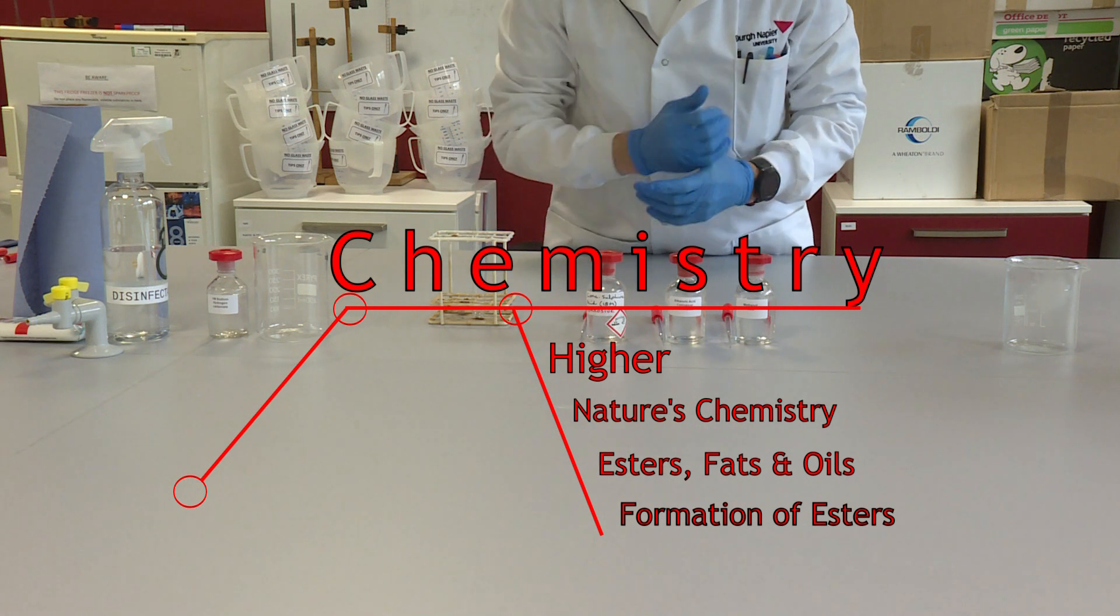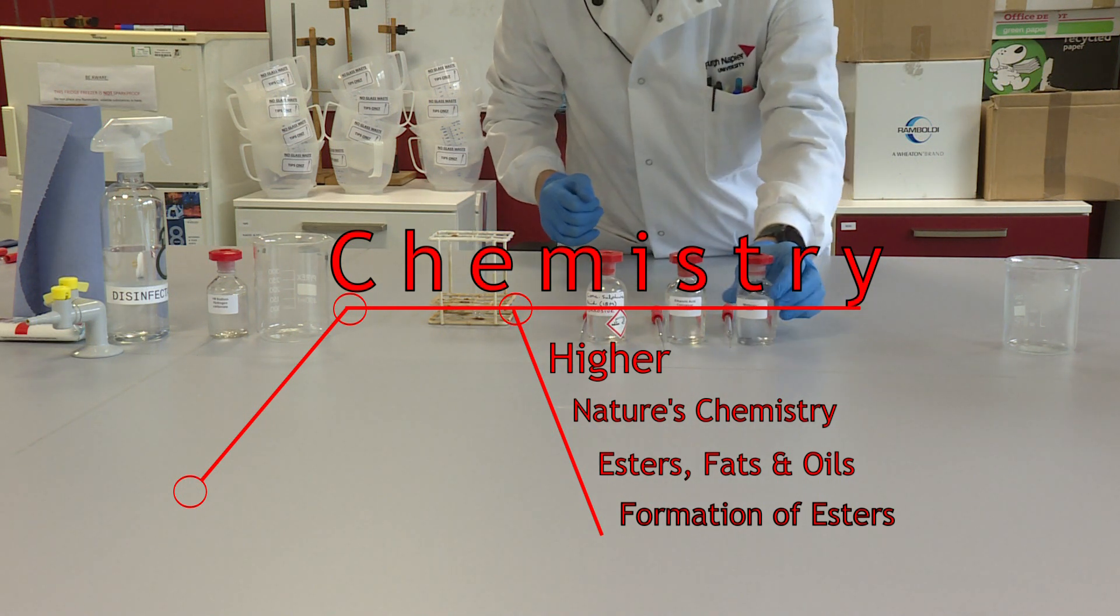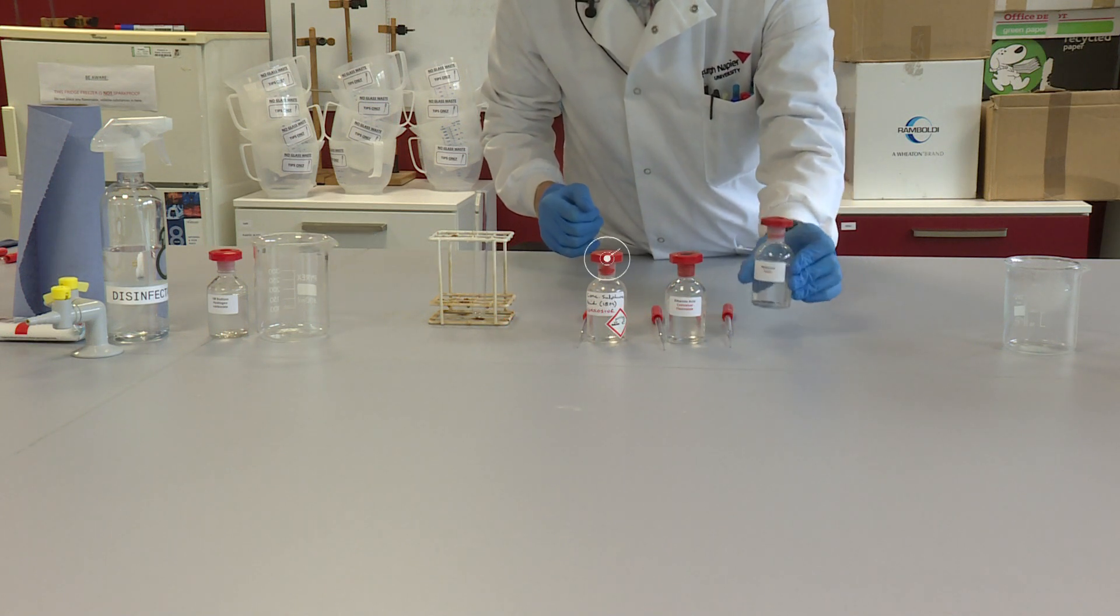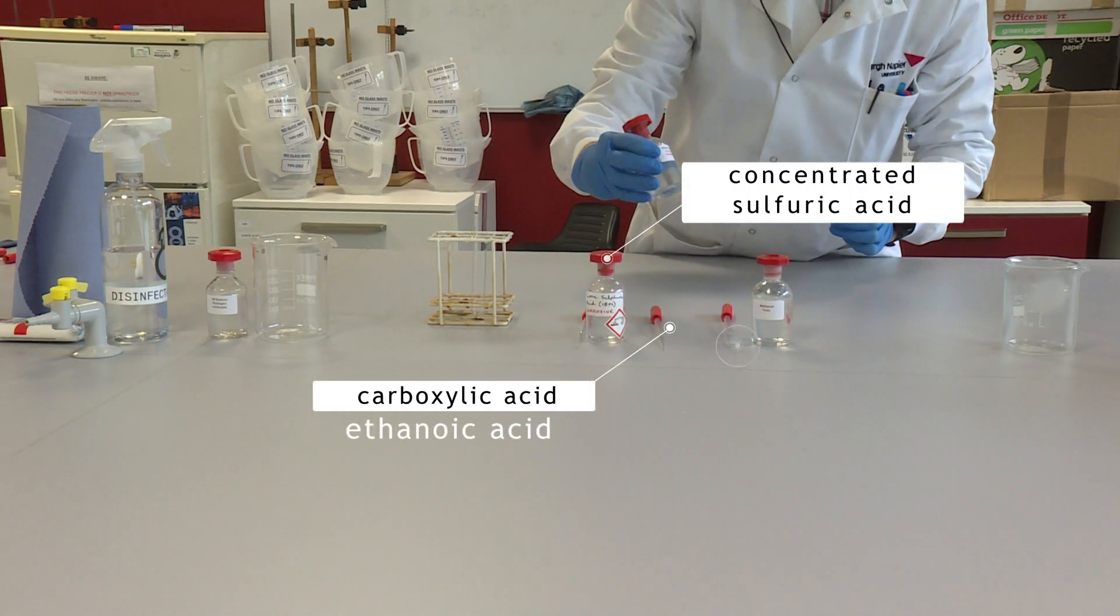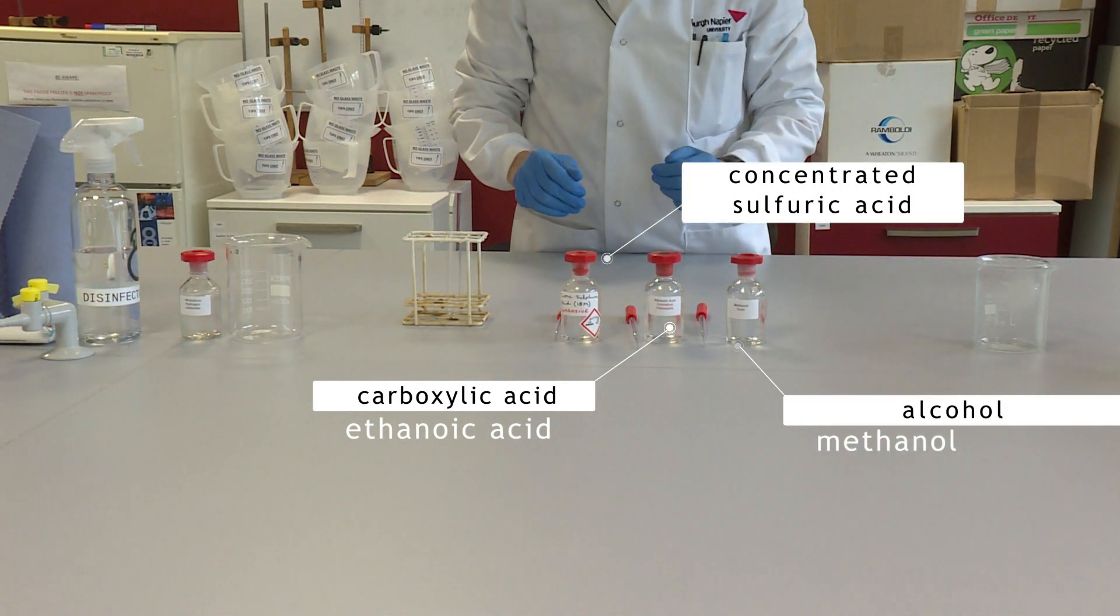In this experiment we're going to prepare an ester from an alcohol and a carboxylic acid. The alcohol we're using is methanol and the carboxylic acid is ethanoic acid. We're making an ester called methyl ethanoate.